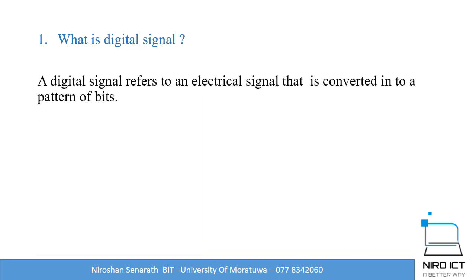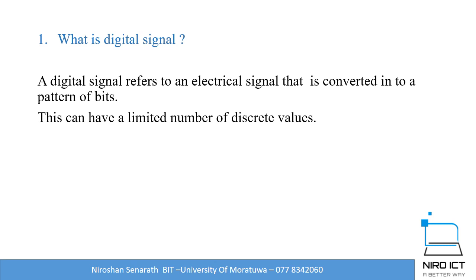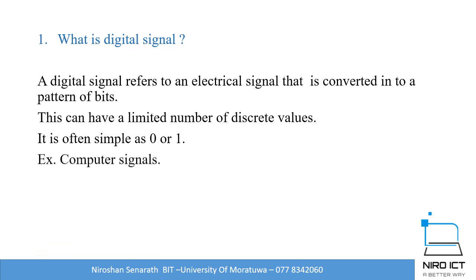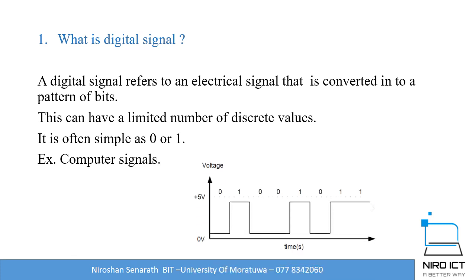A digital signal refers to an electrical signal that is converted into a pattern of bits. It can have a limited number of discrete values — there are two types of values: ones and zeros. When we talk about digital data, we have ones and zeros. The best example is computer signals, and this is the shape of the digital signal with two separate discrete values.